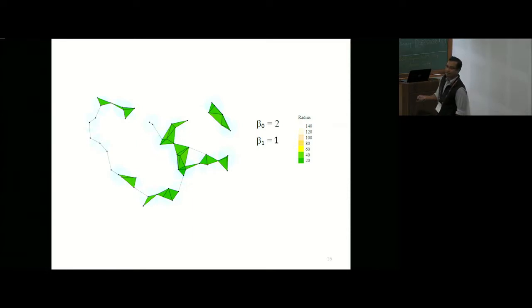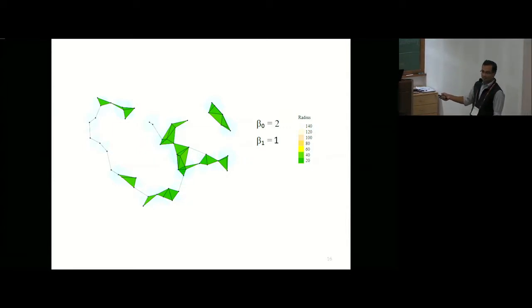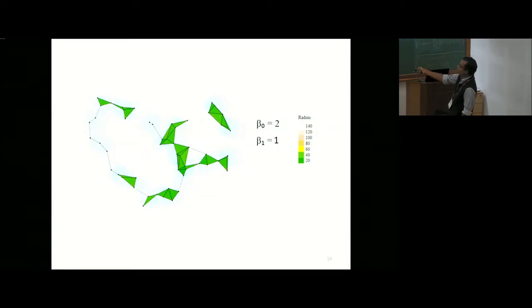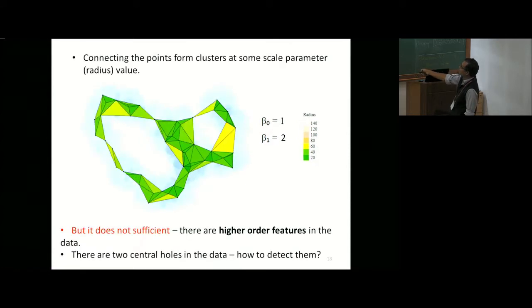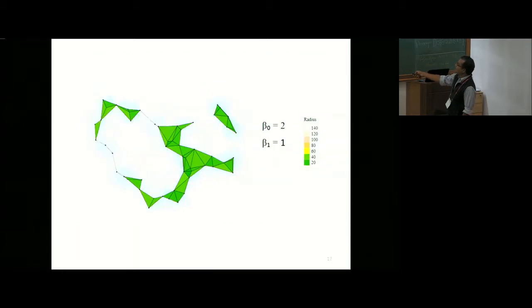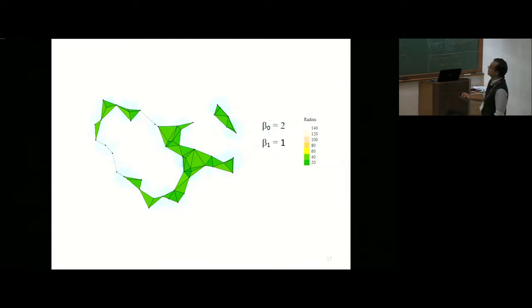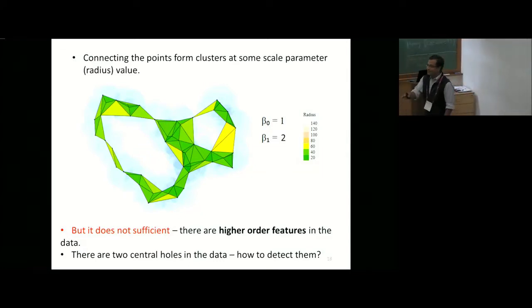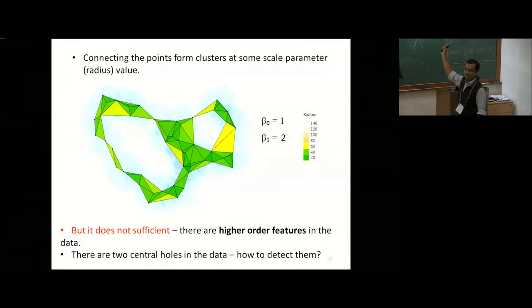You connect things as per the prescription. The color coding is the radius. If you keep growing — this is the first, second, and third connection — these connections correspond to larger radii of these spheres. For the points that are disconnected and not yet touching each other, you need a larger sphere, a larger circle to get connected. Until we exhaust all the points, the connections connect the points from clusters at some scale parameter.